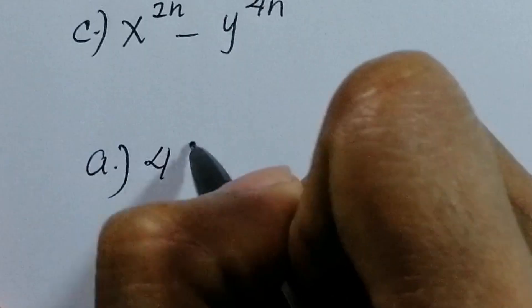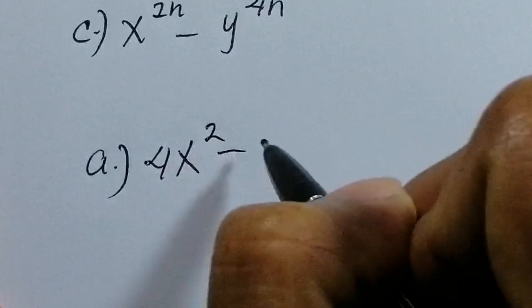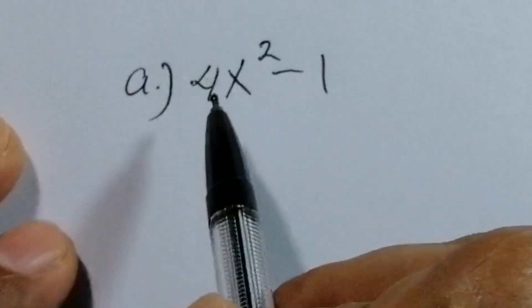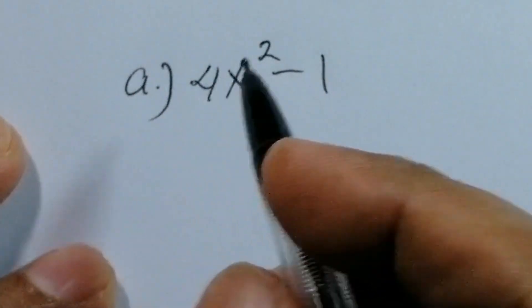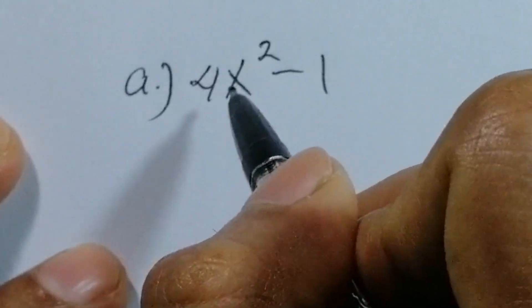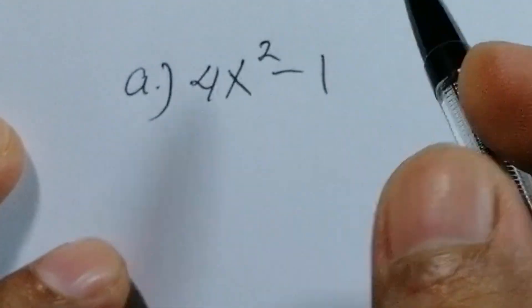We begin with letter A: 4x² - 1. We're going to rewrite this expression. The square root of 4 is 2.